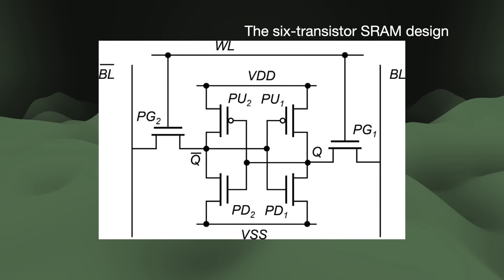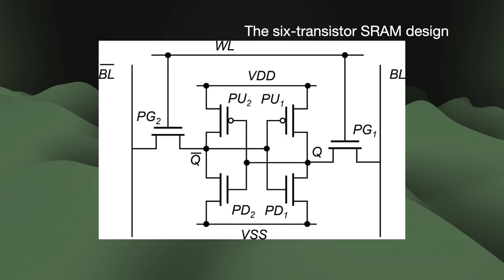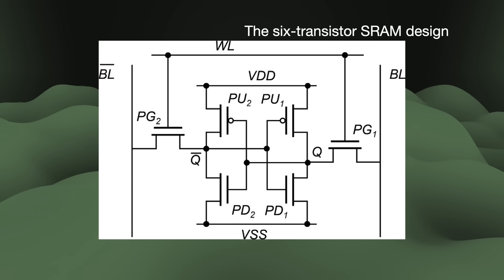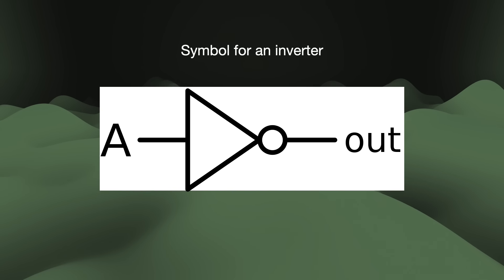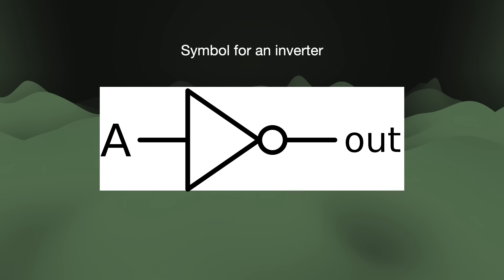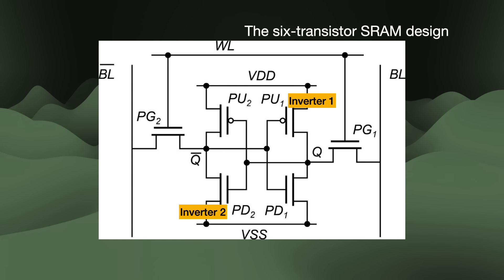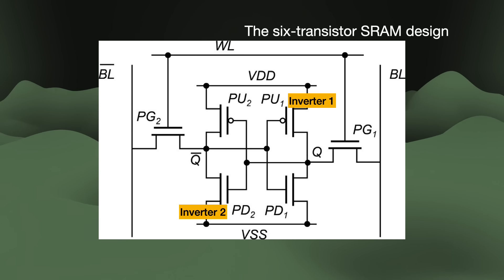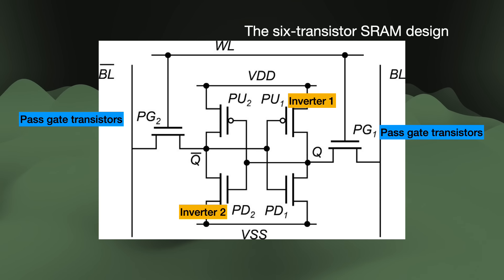The most common cell design is the 6-transistor SRAM cell. It uses what is called a bi-stable latch — bi-stable because it has two stable states representing the ones and zeros of a bit of data. The latch is made up of a pair of inverters. An inverter is a single input and output device that toggles the signal to its opposite state: a low signal (zero) becomes a high signal (one), and vice versa. We put two inverters together to create a feedback loop, with the output of one inverter connecting to the input of the other. An inverter is made up of two transistors each, so that is four transistors in total. The other two transistors — called the pass gate transistors — are for reading or writing the value of the data bit inside the latch.